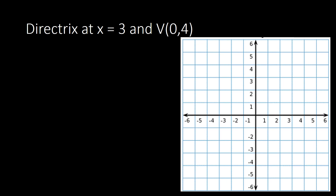Since we have the directrix at x equal to 3, on the x-axis we locate 3 and draw a vertical line — that is our directrix. Then for the vertex at (0, 4), we locate 0 on the x-axis and move up 4 units on the y-axis. This point is our vertex at (0, 4).